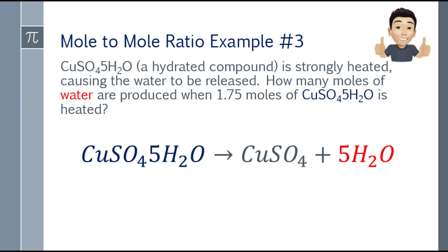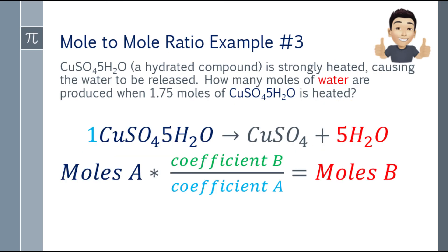Example 3: copper sulfate pentahydrate (CuSO4·5H2O) is a hydrated compound that is strongly heated, causing the water to be released. How many moles of water are produced when 1.75 moles of copper sulfate pentahydrate is heated? The given is 1.75 moles of copper sulfate pentahydrate, and we're looking for how many moles of water. I've highlighted the given and the wanted.